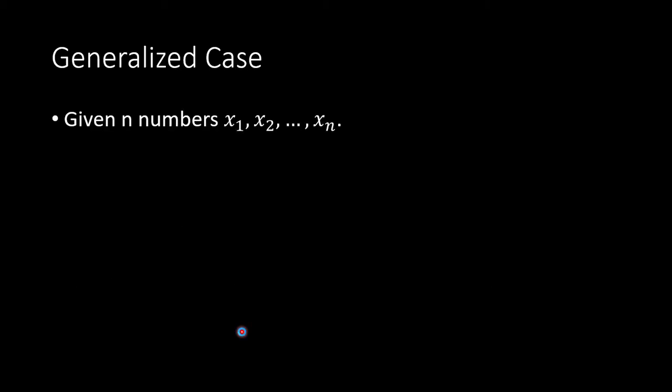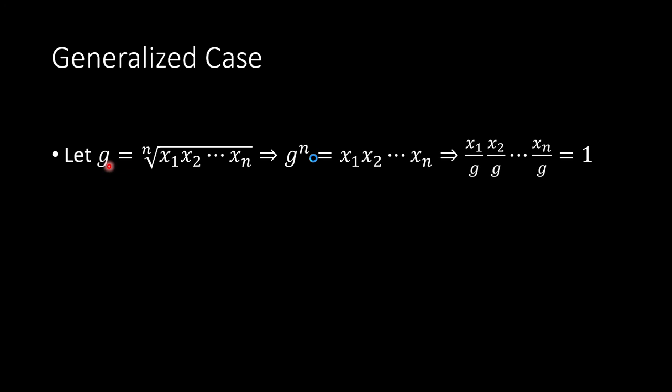The general case is this. Given n numbers x1 to xn, we let g, the geometric mean, equal to the nth root of the product of x1 to xn. Then g to the power of n is equal to the product of the n numbers.